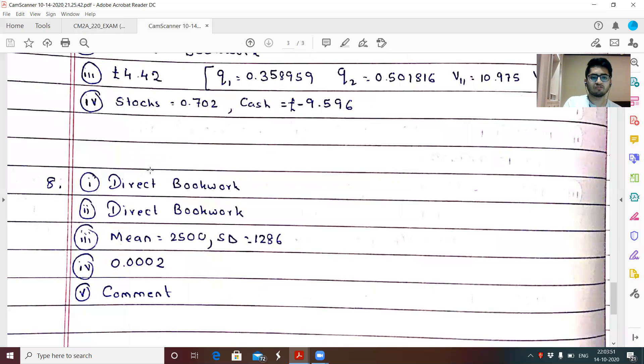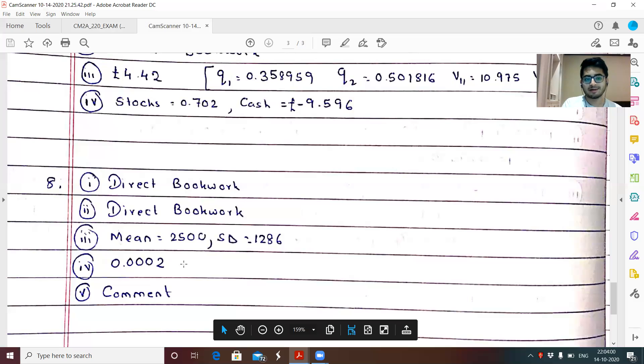So first two parts for direct book work. Part three, I was getting the answer of 2500 and standard deviation of 1286. Part four, 0.002 was the probability of ruin, which we had to calculate. Part five was a comment part.